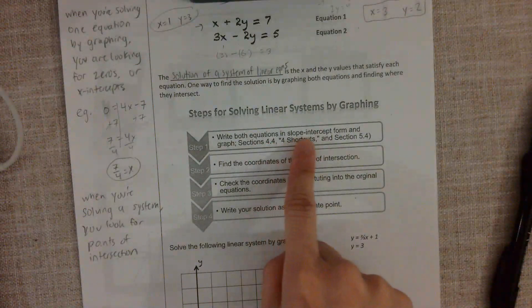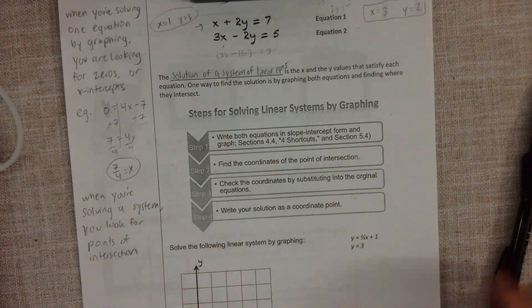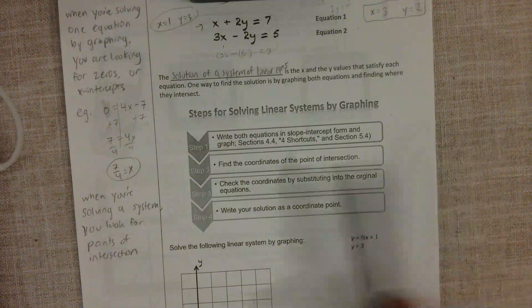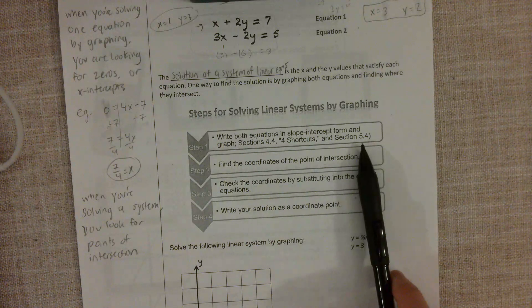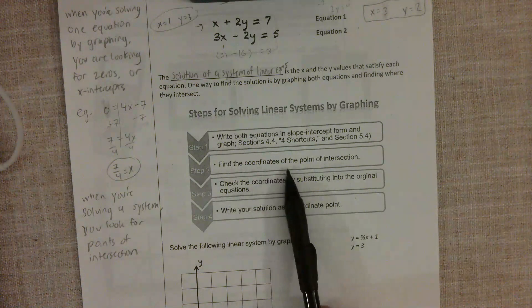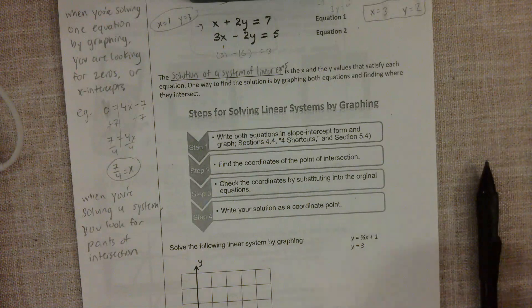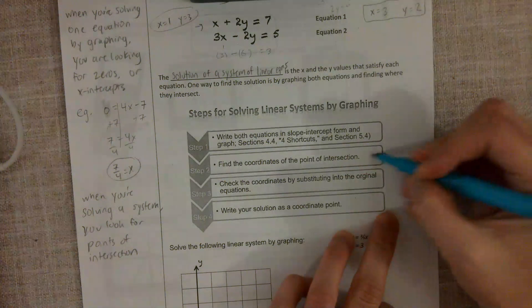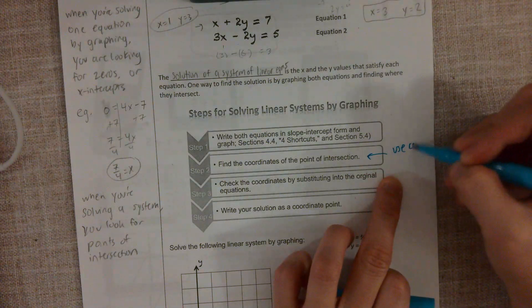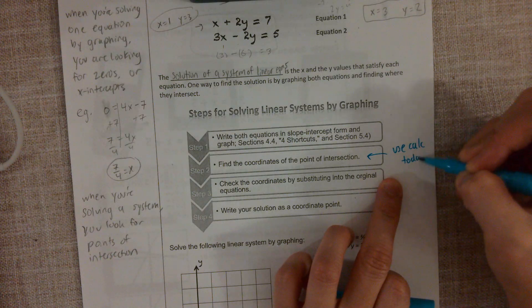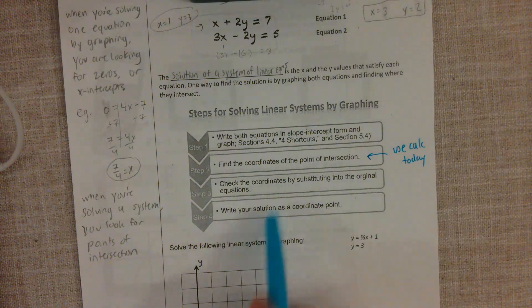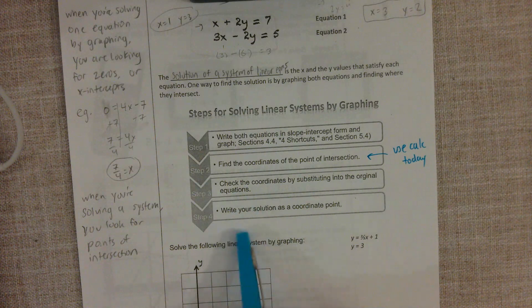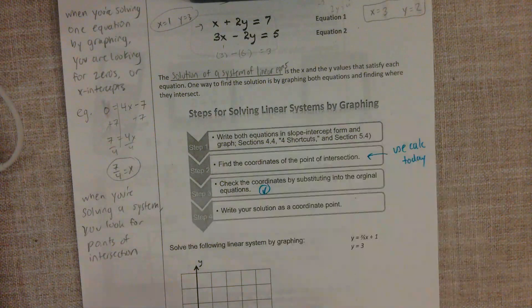Here are the steps. Write both equations in slope-intercept form and graph. Find the coordinates of the point of intersection — use the calculator today. Check the coordinates by substituting them into the original equations. Write your solution as a coordinate point. This is our check step.